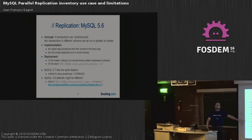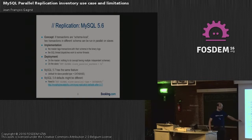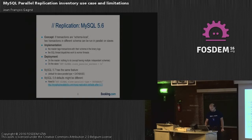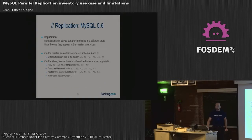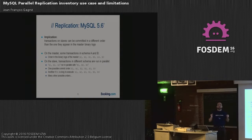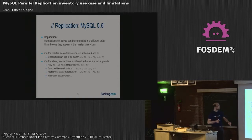MySQL 5.7 has the same behavior by default, and MySQL 5.8 might have different behavior. If you want to use schema-type parallel replication, you'll have to tell MySQL 5.7 to use the database type.